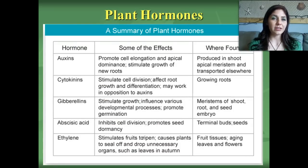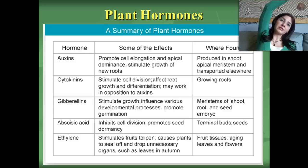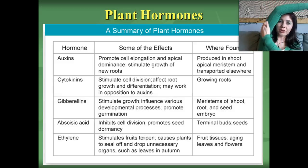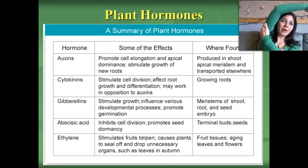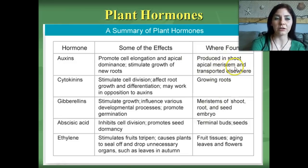Make sure you write these down because these will definitely be on your exam. Auxins promote cell elongation and apical dominance, and also stimulate the growth of new roots. On exams there's always a question about a plant bending toward the sun — the most elongated portion of the plant has the highest concentration of auxin. The side facing away from the sun is elongated, while the side facing the sun is compressed. Auxins are produced in the shoot's apical meristem and transported elsewhere.